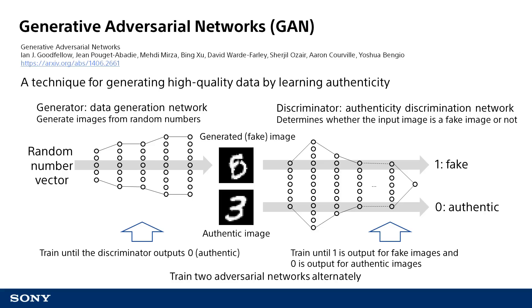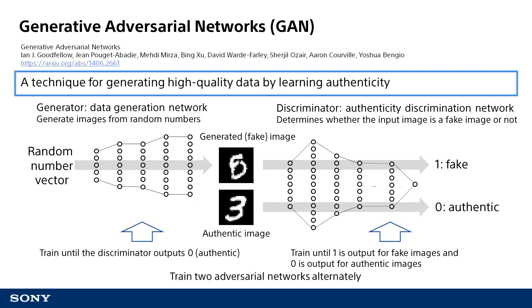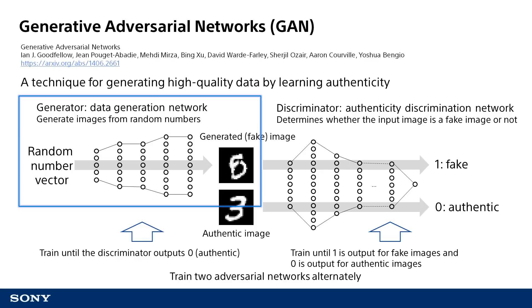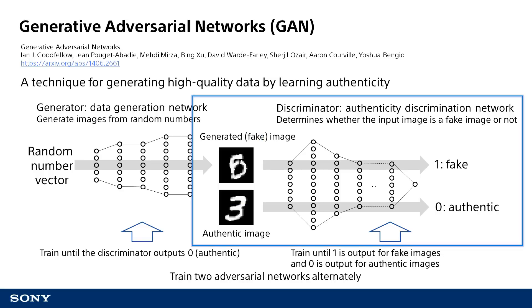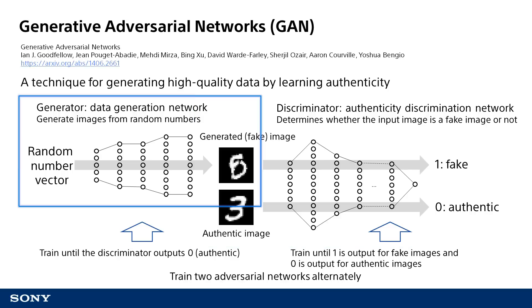To put it simply, generative adversarial networks GAN is a technique used to generate high-quality data by training a neural network to recognize authenticity of generated images and to function as an image generation system that generates authentic images. Here, we have a network that generates images based on some vector — this neural network is called the generator. We will also use another network called the discriminator to train the GAN. This network is only used in GAN training, unlike the image generation network that is the end goal.